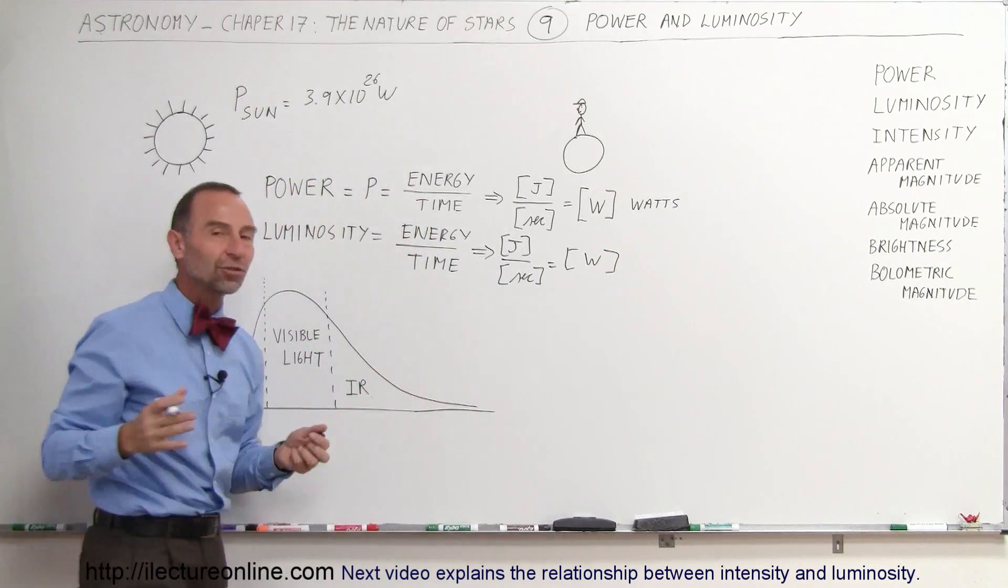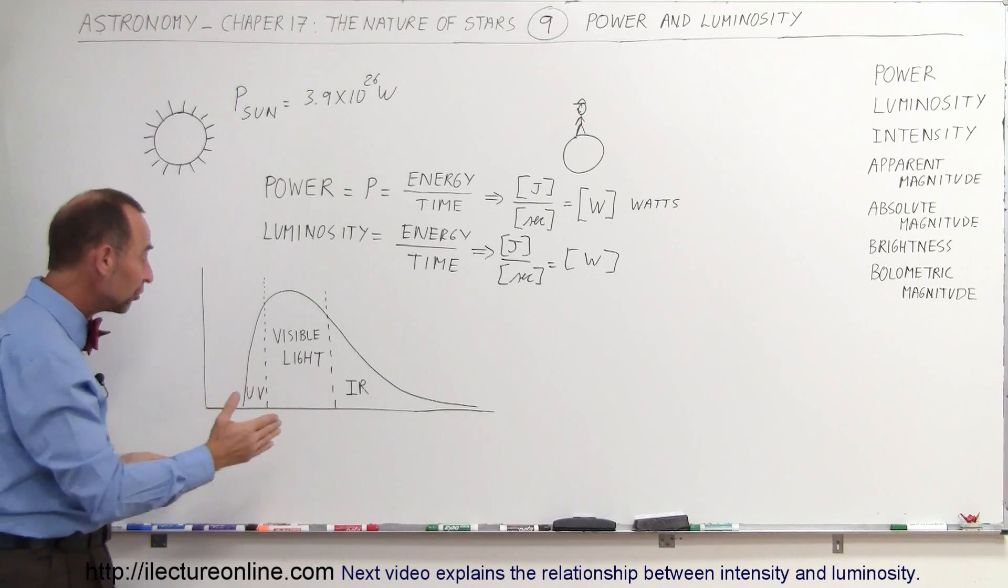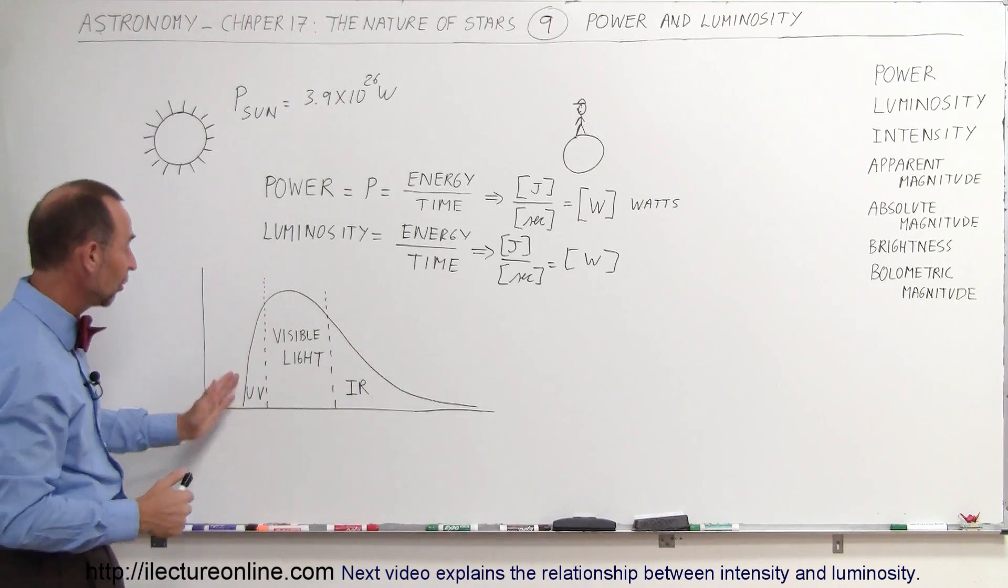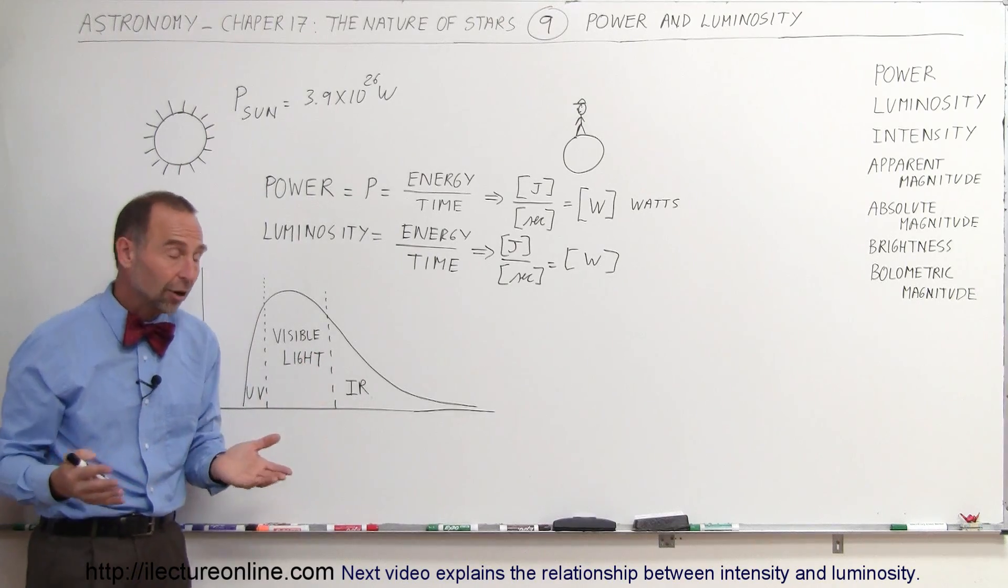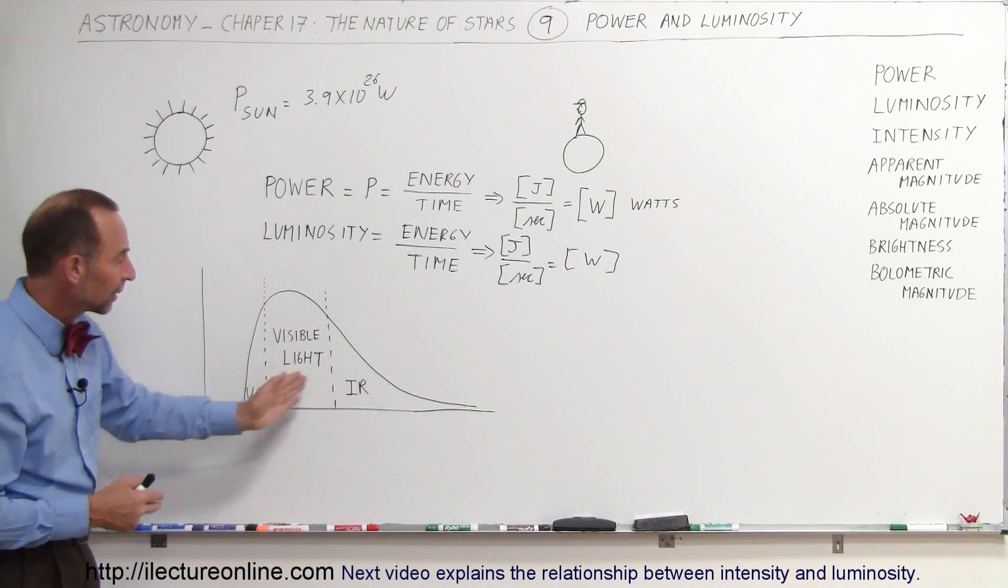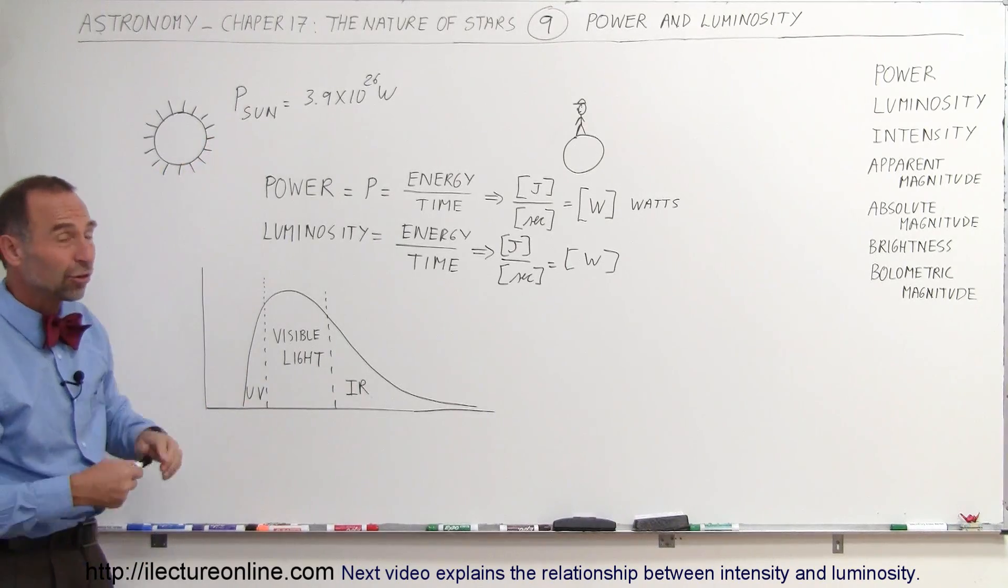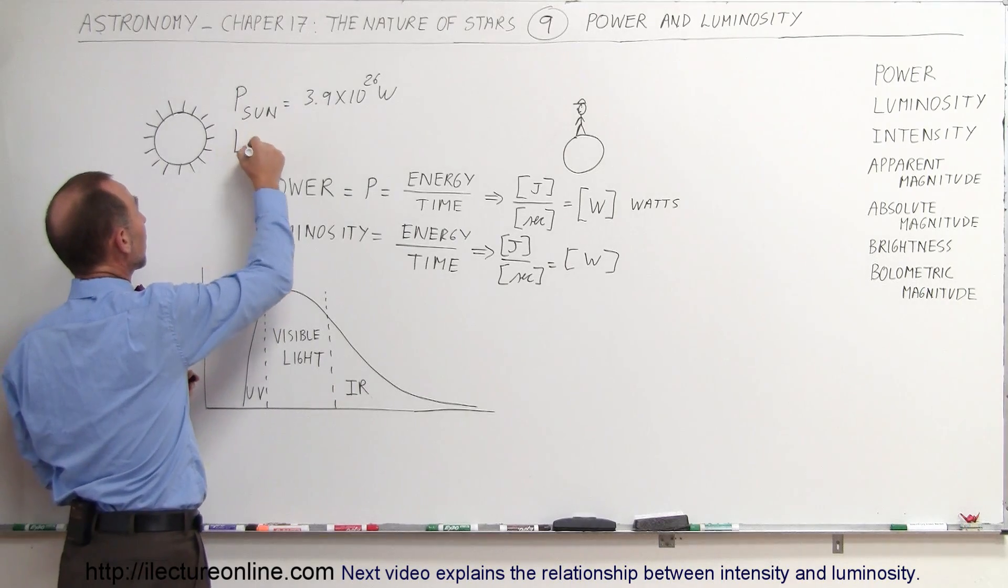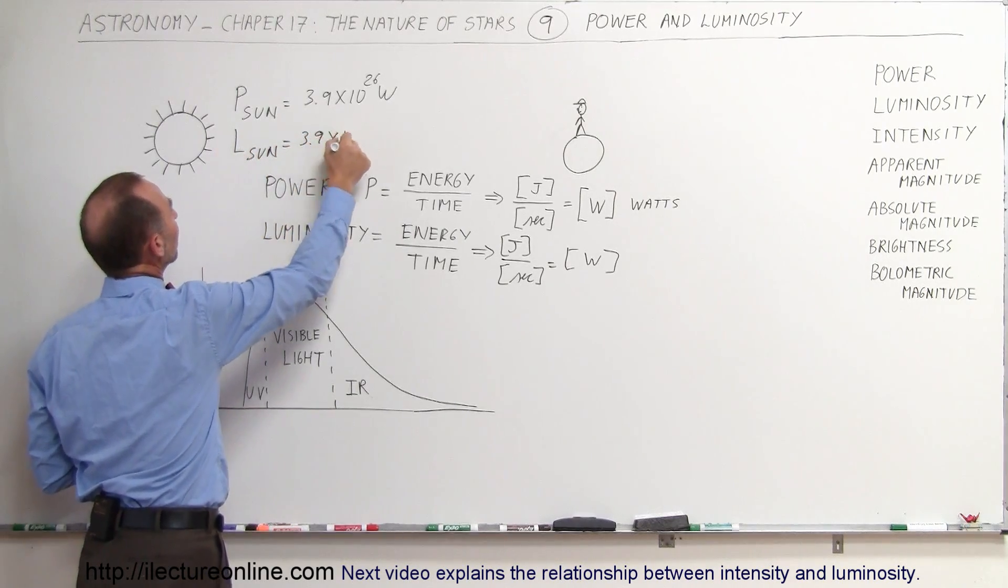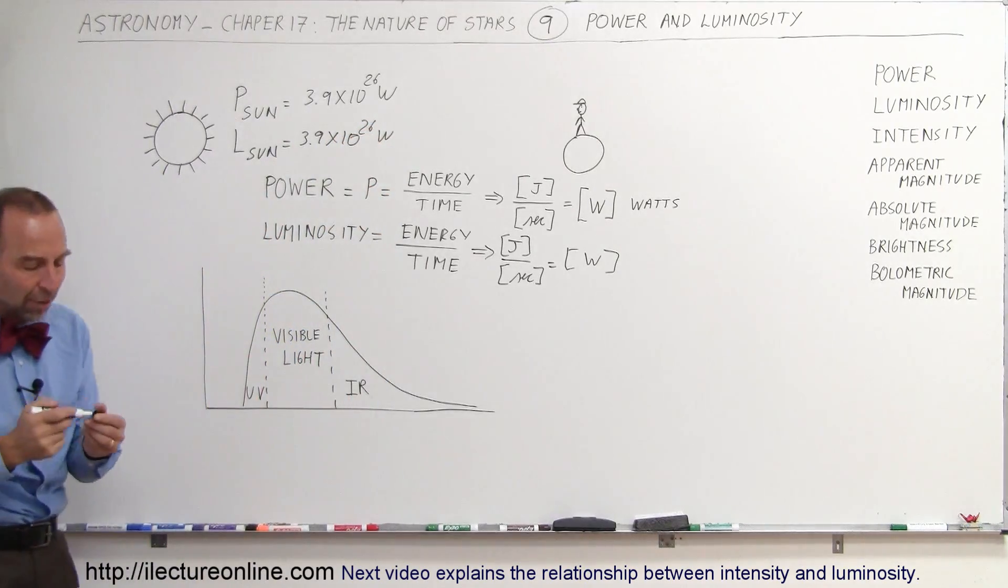So the luminosity of stars is expressed in terms of watts, how many joules per second they emanate, and also they talk about all the various energy frequencies or energy wavelengths, UV, visible light, infrared, and some stars may even put out radiation even at higher frequencies, but typically it's in these three frequency bands. So we talk about the power, we can also talk about the luminosity of the Sun, which is equal to 3.9 times 10 to the 26 watts, and so you can see that it's really the exact same thing.